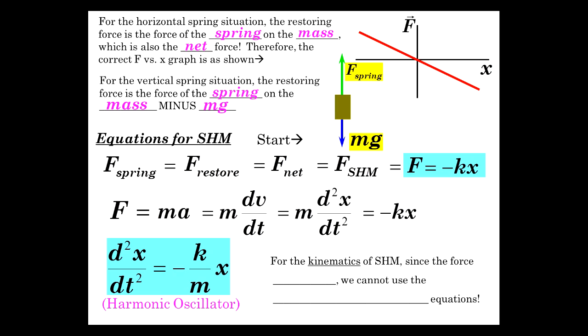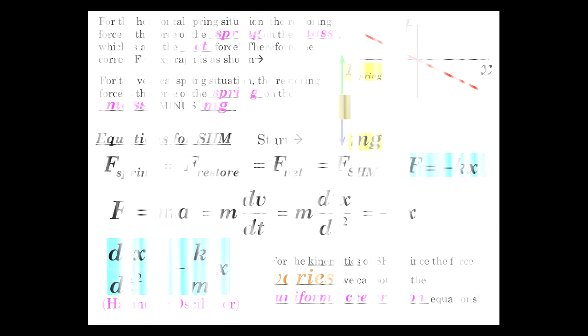For the kinematics of SHM, the force is not constant — the force varies as minus kx. If the force varies, the acceleration is not constant, so we can't use the uniform acceleration equations. We'll need to do more analysis, but the math won't be that heavy-duty because we're going to use what's called the reference circle to get a conceptual understanding and mathematical description of this motion.